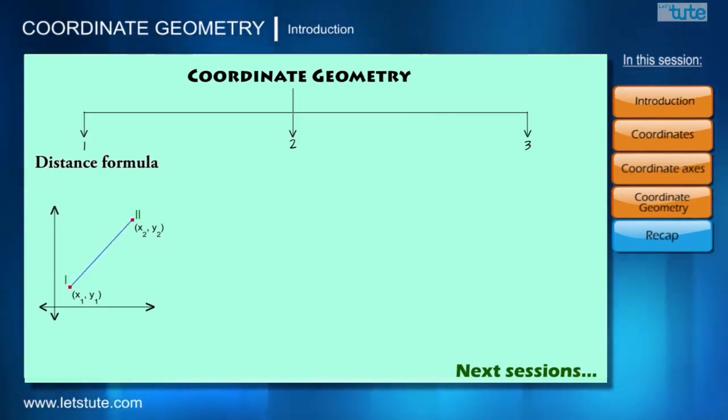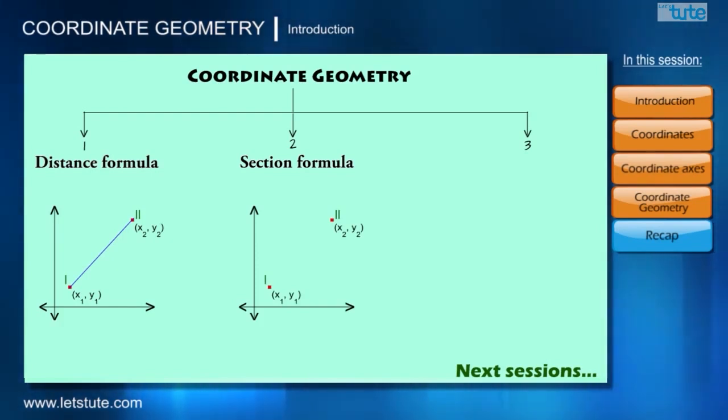The next concept we will learn is section formula. Under this concept, when two points are given with their coordinates and the line joining the two points, we will find the coordinates of the third point which is lying anywhere on this line segment, which is dividing the line segment into the given ratio.